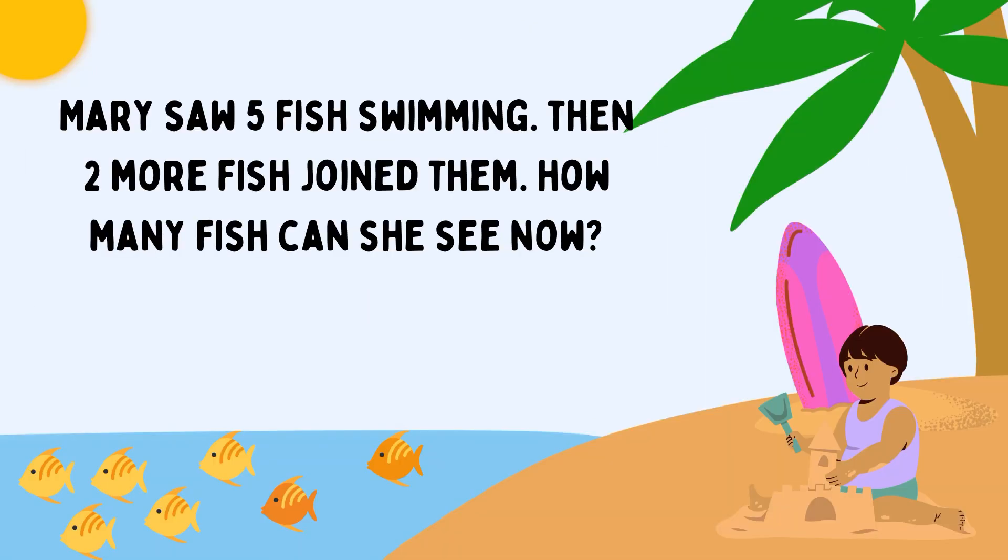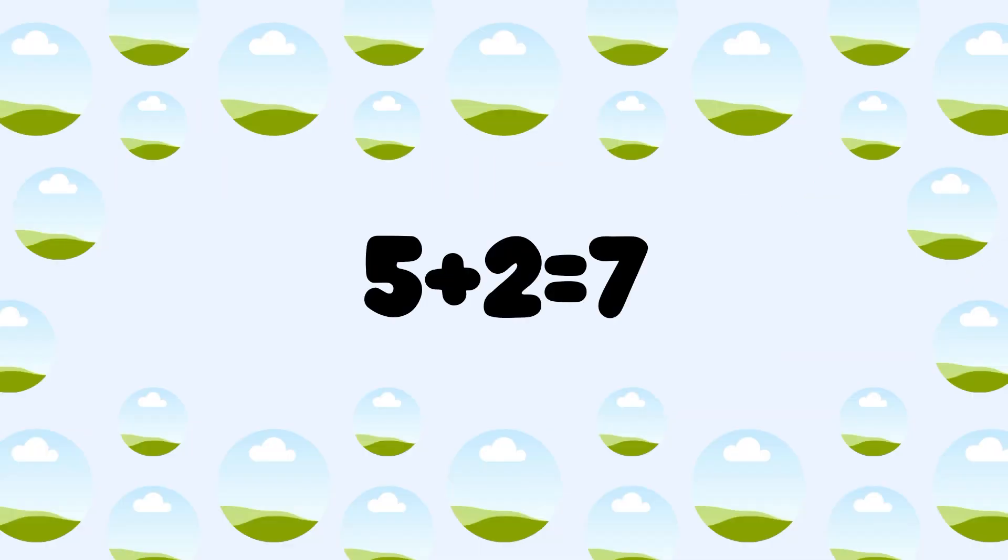Next one. Mary saw 5 fish swimming. Then 2 more fish joined them. How many fish can she see now? Mary saw 5 fish plus 2 more joined. 5 plus 2 is equal to 7. Total 7 fish swimming now.